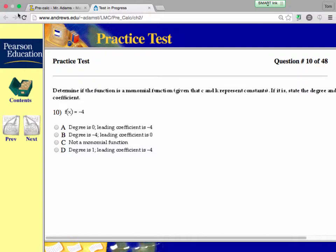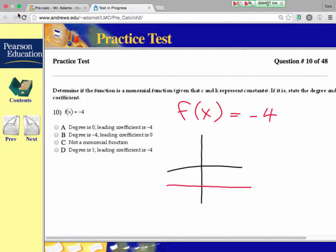So f of x equals negative 4. This is a function because if I graph this, it's just a horizontal line at y equals negative 4.